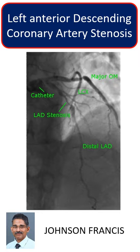Stenosis of the mid-segment of the left anterior descending coronary artery is seen on the AP cranial view, just after the diagonal branch. The distal LAD is relatively narrow, with mild ectasia just after the LAD stenosis. The proximal LAD also shows mild plaques.